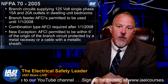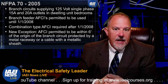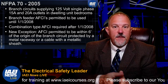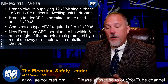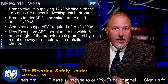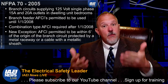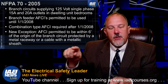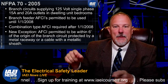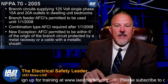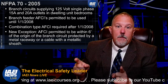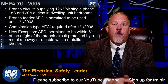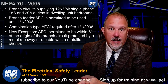In 2005, branch circuits supplying 125-volt, single-phase, 15- and 20-amp outlets in dwelling unit bedrooms remained required. The 2005 code began phasing out the branch feeder type AFCI in favor of the combination type AFCI. This is important to understand because you'll see another reason it matters when we get to the 2014 code.